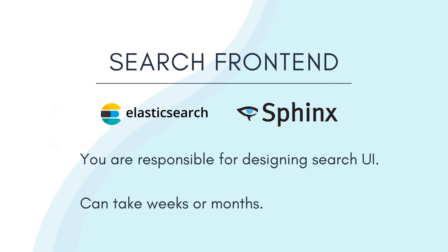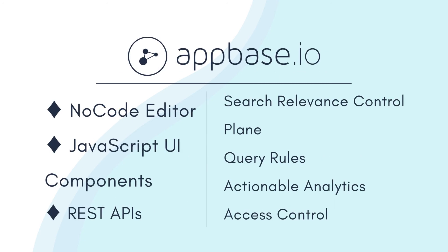Here is where appbase.io comes in. Businesses can build fast and relevant search experiences using our no-code editor, JavaScript UI components or declarative REST APIs. Search relevance settings like weights, typo tolerance and synonyms can be set from a point and click control plane in real time. Configuring query rules to extend search relevance by promoting or hiding specific results, changing search behavior and adding facets based on query, categories or time frames. Visualize the impact of search with popular search terms, CTRs, conversions and more. The telemetry to record end-user behavior is pre-configured out of the box.